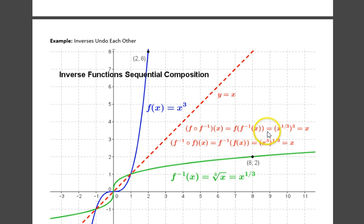in one order, we have x to the 1/3 cubed, and the other x cubed to the 1/3. A power to a power, you multiply it. In either case, we end up with x. So, their graphs of the sequential composition is the same as y equals x.